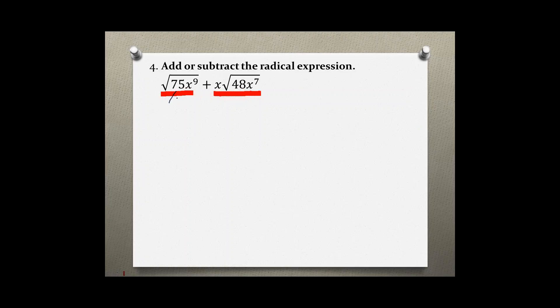Let's start with the first term and see if we can separate this into its perfect square root and its non-perfect square root. So 75 has two factors which would be 25, the perfect square root, and times 3.